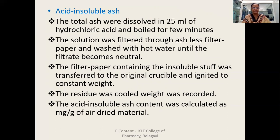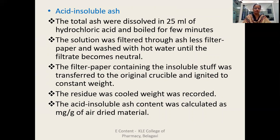For the acid insoluble ash: the total ash is dissolved in 25 ml of hydrochloric acid and boiled for a few minutes. The solution is filtered through ashless filter paper and washed with hot water until the filtrate becomes neutral. The filter paper containing the insoluble residue is transferred to the original crucible and ignited to constant weight. The residue is cooled, the weight is recorded, and the acid insoluble ash content is calculated in milligrams per gram of air-dried material.